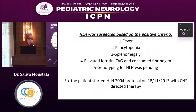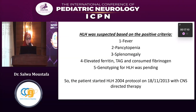According to the revised HLH criteria and the HLH 2004 protocol, the patient was suspected of having HLH because he presented with fever, pancytopenia, splenomegaly, elevated ferritin, elevated triglycerides, and consumed fibrinogen. Genotyping for HLH was initiated, and given the criticality of the condition, the patient was started on treatment with CNS-directed therapy.